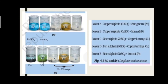Beaker B के अंदर Copper Sulfate (CuSO4) plus Iron nail (Fe), Beaker C के अंदर Zinc Sulfate plus Copper turnings, Beaker D के अंदर Iron Sulfate plus Copper turnings और Beaker E के अंदर Zinc Sulfate plus Iron nail रखे हैं।